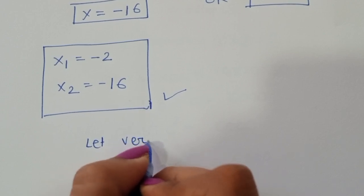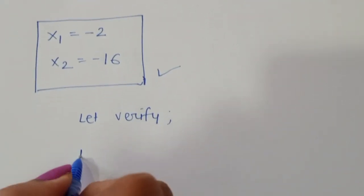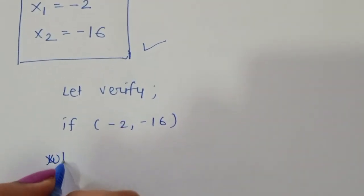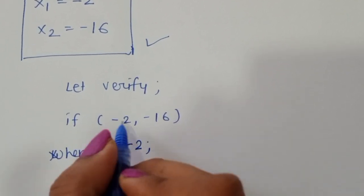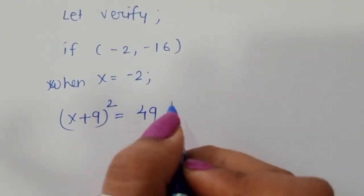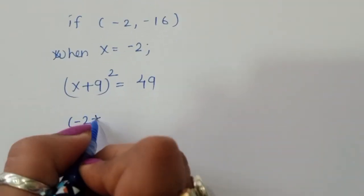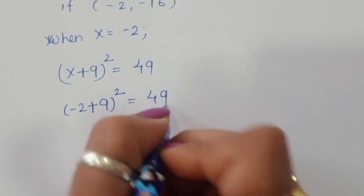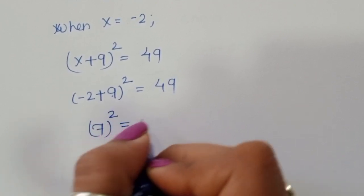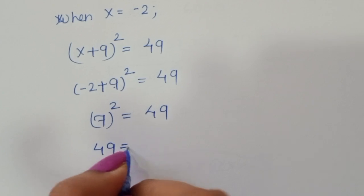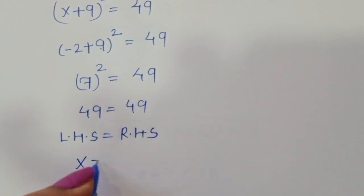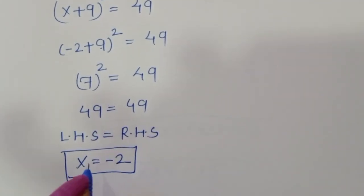Verification: when x = -2, substituting into (x + 9)² = 49 gives (-2 + 9)² = (7)² = 49. Since 49 = 49, LHS equals RHS. So x = -2 is a correct solution.